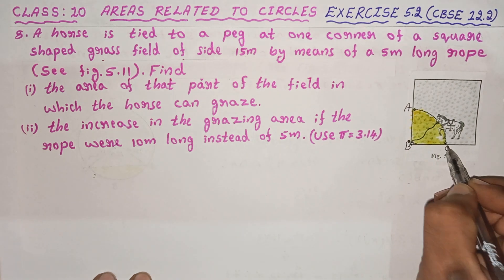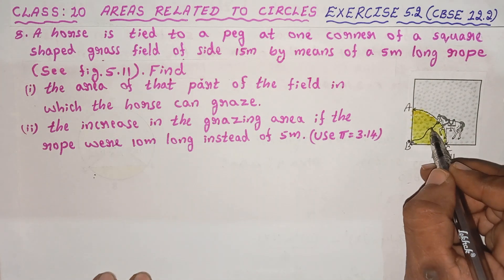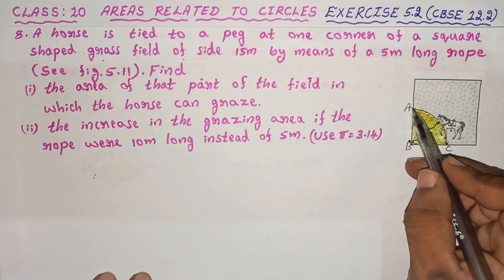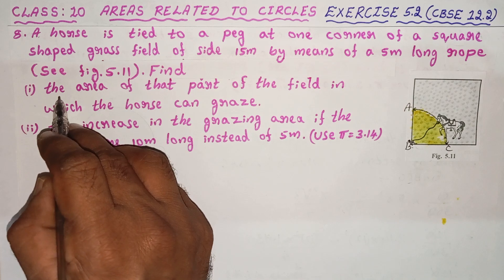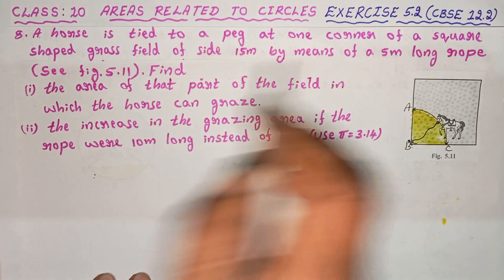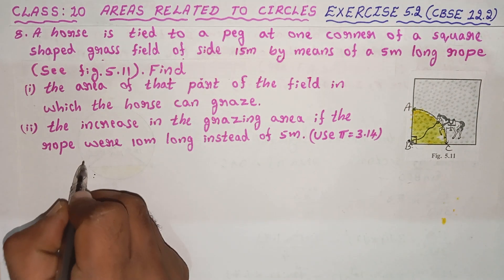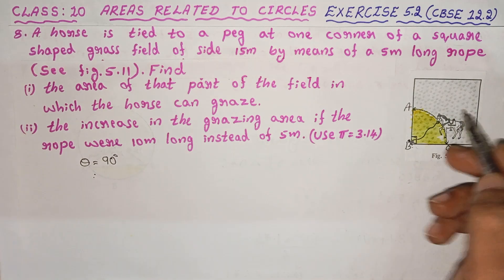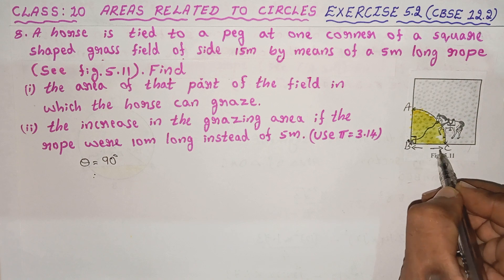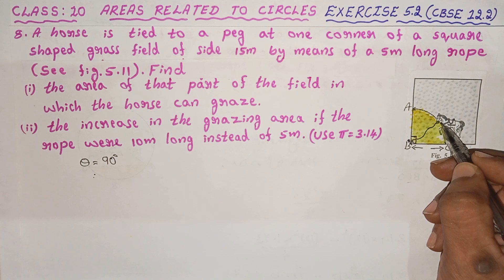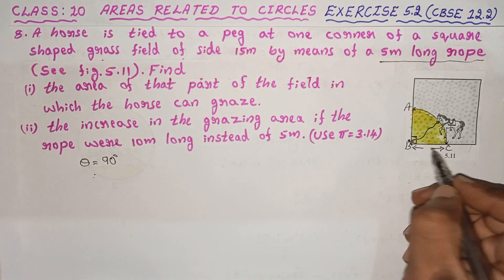This is the radius. This is the arc. This is the sector. This is the area of that part of the field in which the horse can graze. The angle is 90 degrees — theta is equal to 90 degrees. The square corner is 90 degrees, so the sector covers that angle.